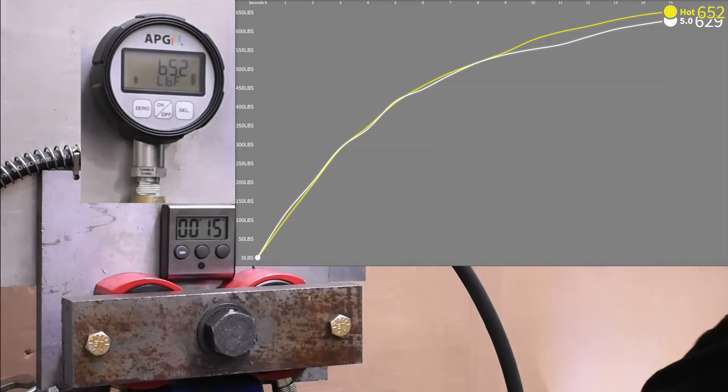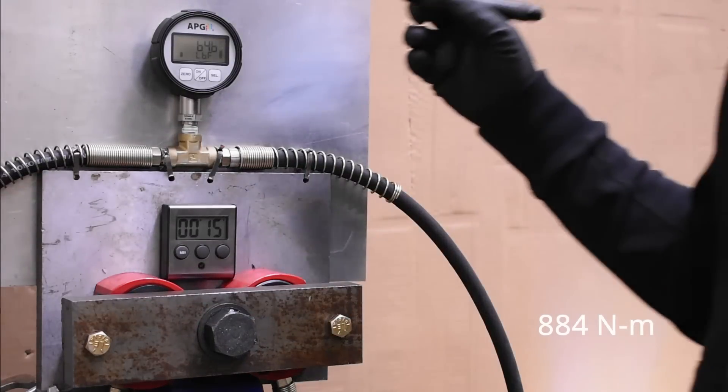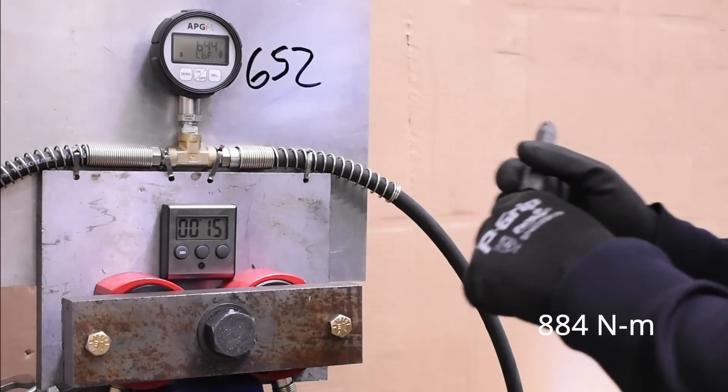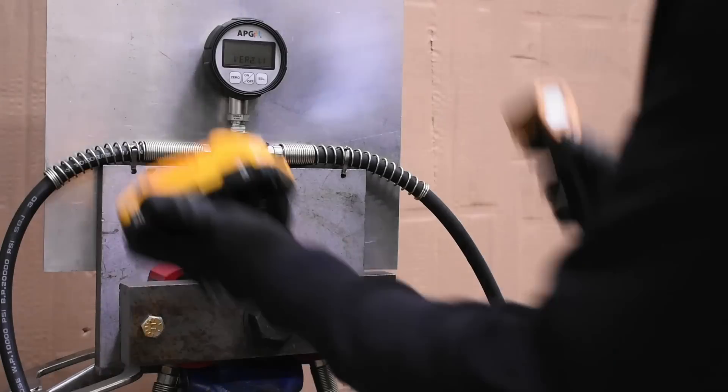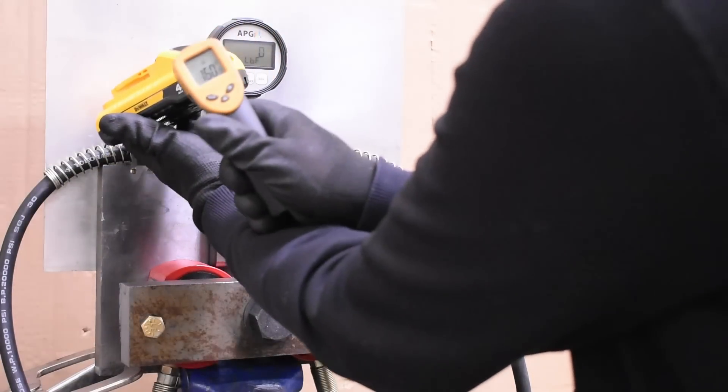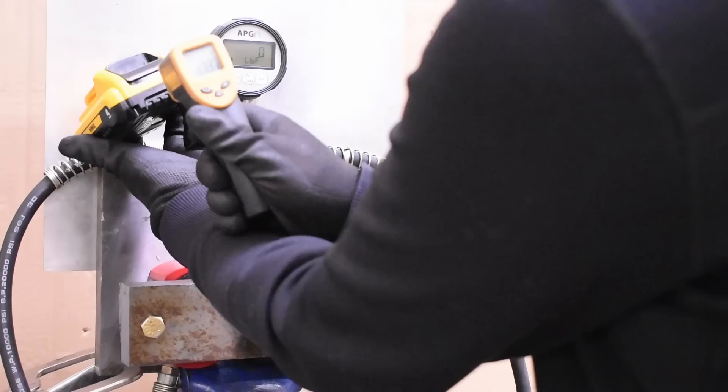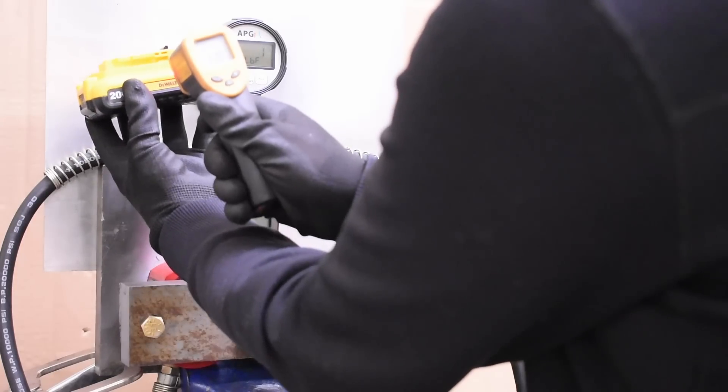652, an increase. We've seen increased performance before on hot impacts which we assumed was sort of just the grease inside thinning out and providing less of a resistance to those planetary gears. But some of that could be those batteries warming up too, not sure. This is why we usually allow for a cool down time between runs.